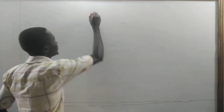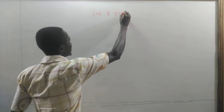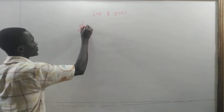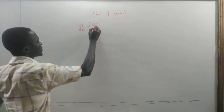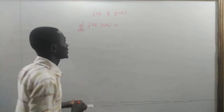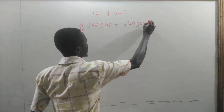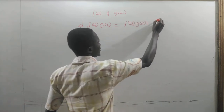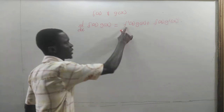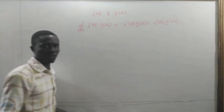Now, if f of x and g of x are both differentiable, then the derivative of f of x times g of x is given by f prime of x times g of x plus f of x times g prime of x, where f prime is the derivative of f of x and g prime is the derivative of g of x.